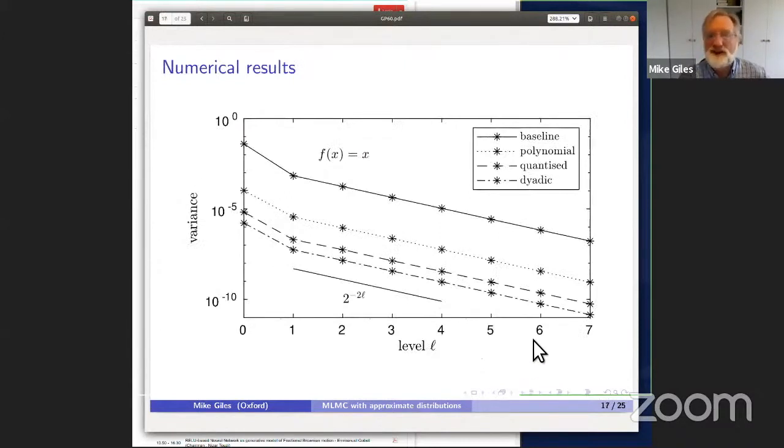Looking at numerical results, here we have the baseline calculation. This is the variance of the multilevel correction, either the correction between coarse and fine paths using the true normals or coarse and fine paths using the approximate normals. To a visual level, you can't tell the difference between those two. Then these ones below are the variances of the four-way corrections using polynomial, quantized, and dyadic approximations for the normals. Things decay very nicely, and there's a large level of savings here. We've got the variance several orders of magnitude smaller than the baseline, so we get good savings.